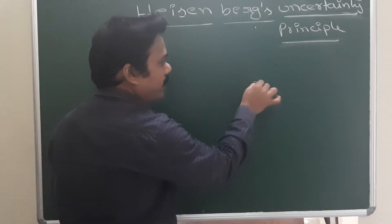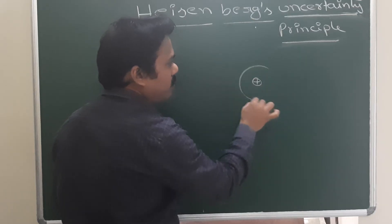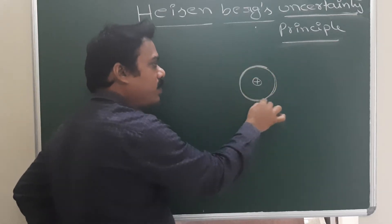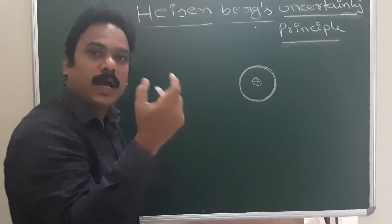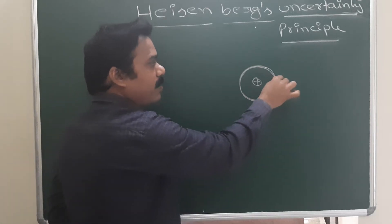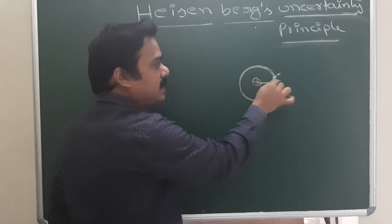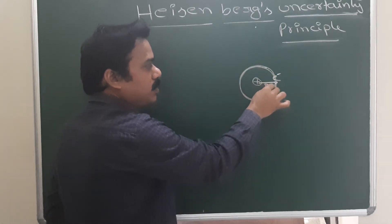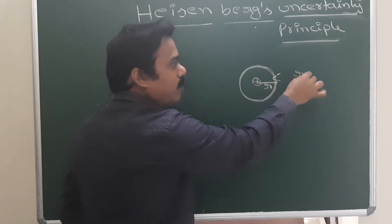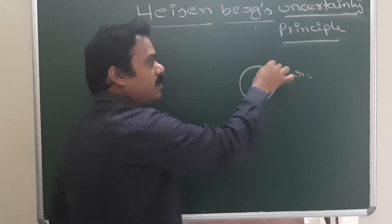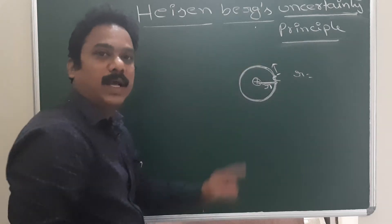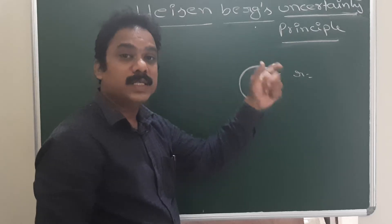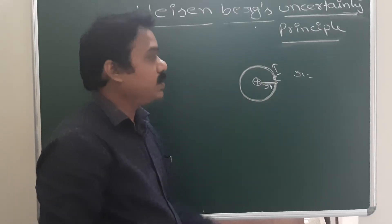As per Bohr's model, the electron revolves around the nucleus in a fixed orbit at a particular radius. So the electron's position is exactly determined — at what distance from the nucleus the electron is, we can find out the position of the electron using the radius formula and the velocity of the electron.